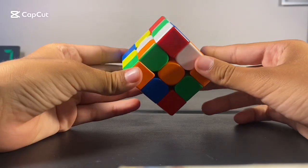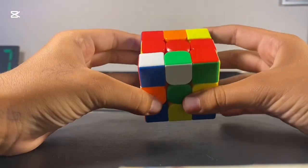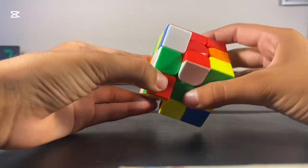So the first step is to make the white cross. To do that, you don't need to learn any algorithms. You just move the faces so that you end up with a cross.